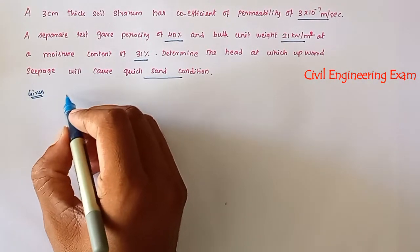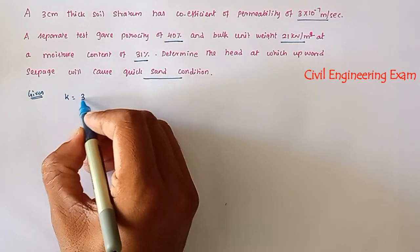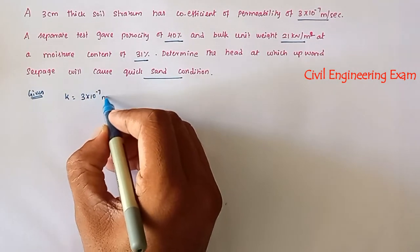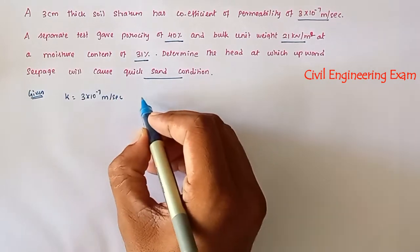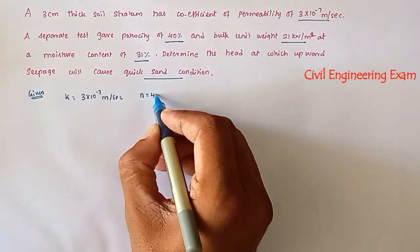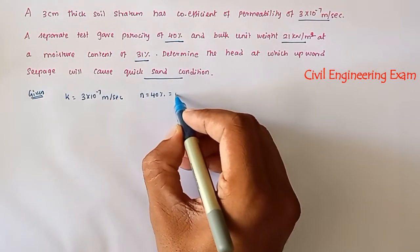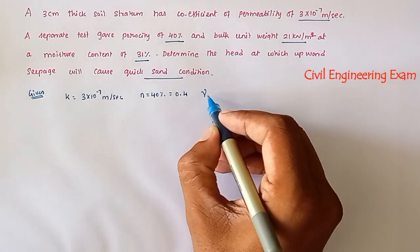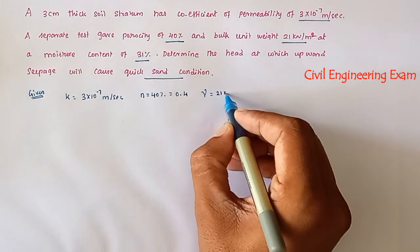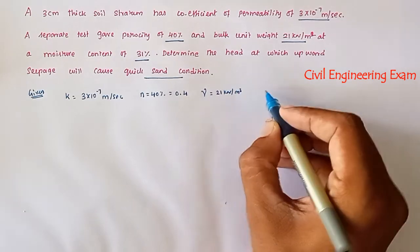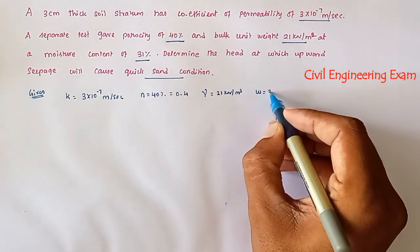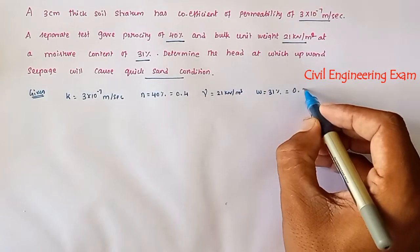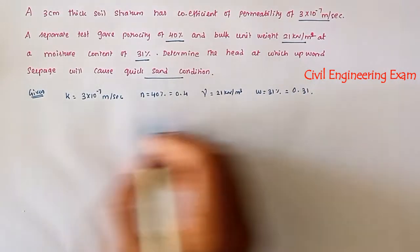Given values: permeability k = 3×10⁻⁷ m/s, porosity n = 40% (0.4), bulk unit weight γ = 21 kN/m³, and moisture content w = 31% (0.31). These are all the given values, and we have to find out the head h at which upward seepage will cause the quicksand condition.